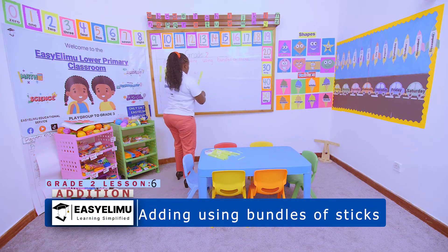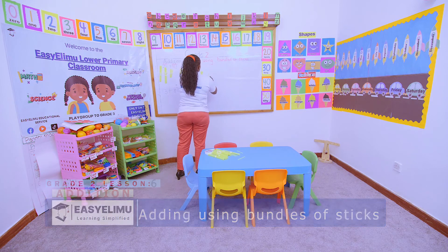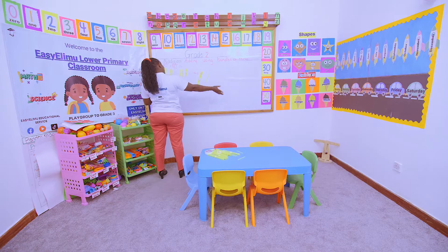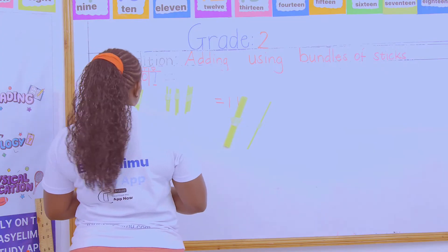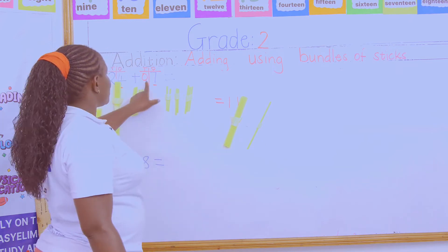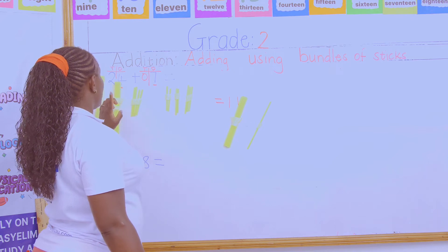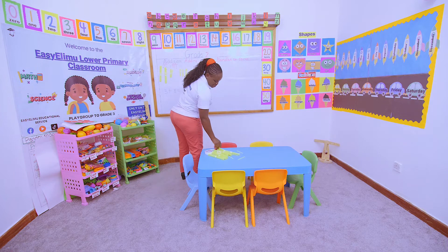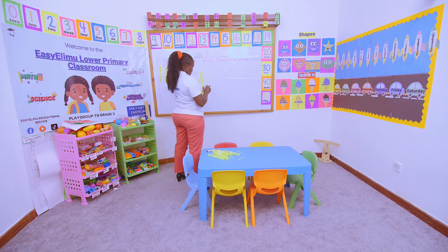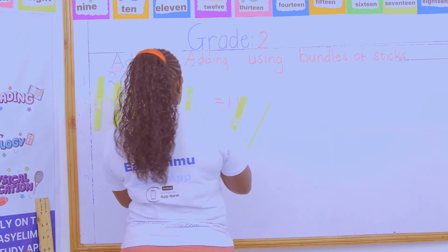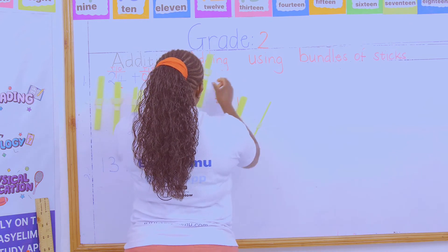I'll get one bundle of ten sticks and one more. Can I just put them on one side? No — because anytime you form one bundle of ten sticks you have to move them to where the other tens are. Now I was supposed to add the ones to the tens place value, and because there is no number in the tens place, any number plus zero is that number.